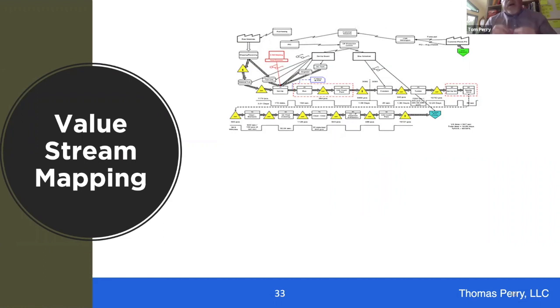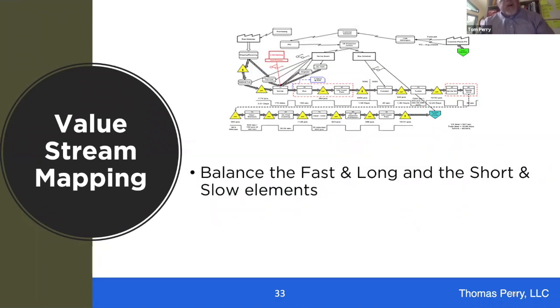And what all of this is suggesting is that value stream mapping, as we do it today, is too narrow. Value stream mapping needs to be much more multidimensional. Right now, it just focuses on the work. But we can start to measure that in terms of the fast and long and the short and slow elements.